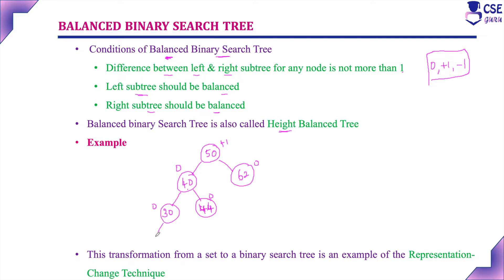If we add one more node with value 20, the height of the left subtree becomes 3, and 3 minus 1 gives plus 2 for the root node. The balance factor for the root node becomes plus 2, which exceeds 1, making the tree unbalanced. While some nodes remain balanced, the root is unbalanced. Whenever during insertion the tree becomes unbalanced, we have to convert it into a balanced one. How to convert an unbalanced search tree into a balanced one — we will discuss that in AVL tree.